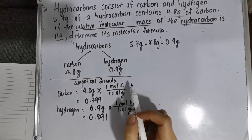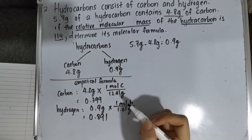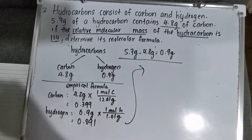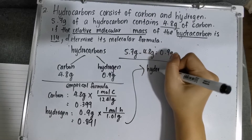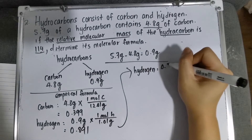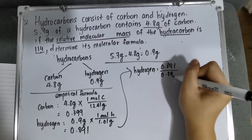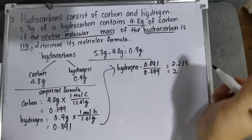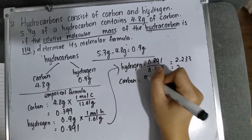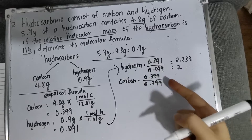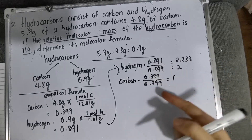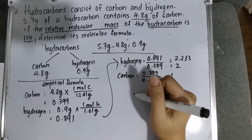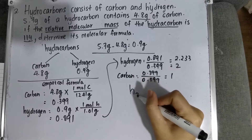Then, for the empirical formula, you have to divide by the smallest amount. So between these two, the smallest amount is 0.399. For hydrogen: 0.891 divided by 0.399 equals 2.233, so rounding to the nearest whole number, that will be 2. For carbon: 0.399 divided by 0.399 equals 1. So your empirical formula will be CH2.